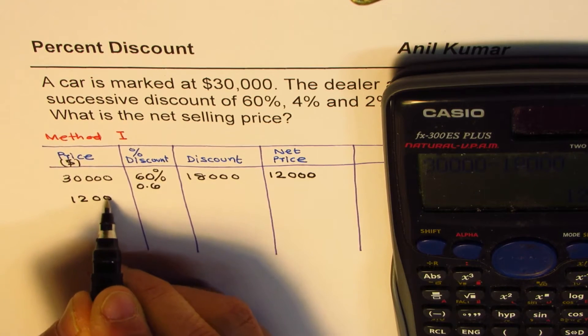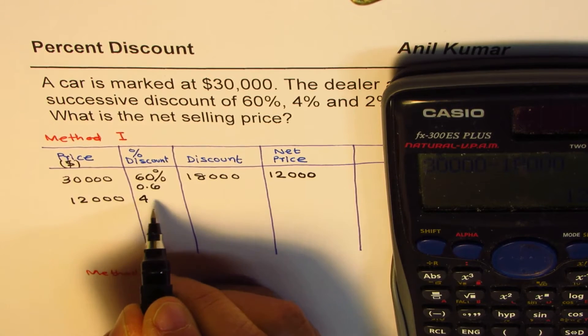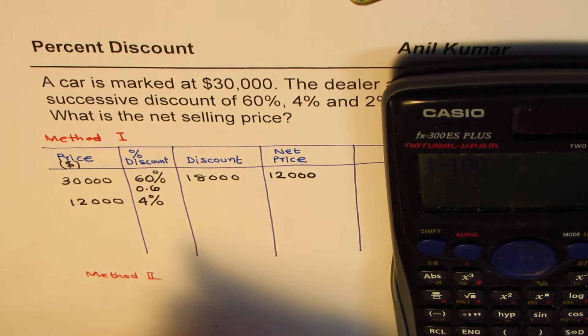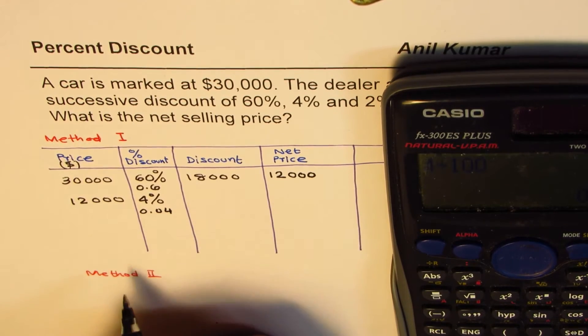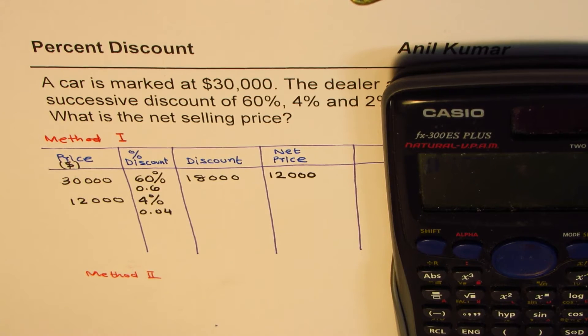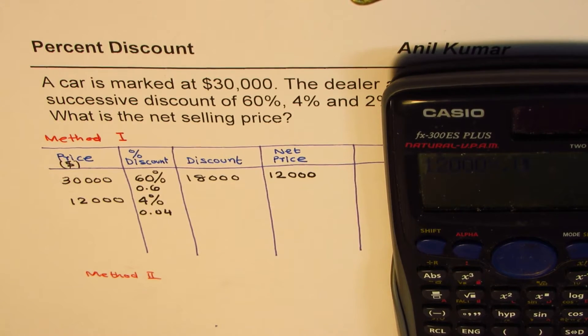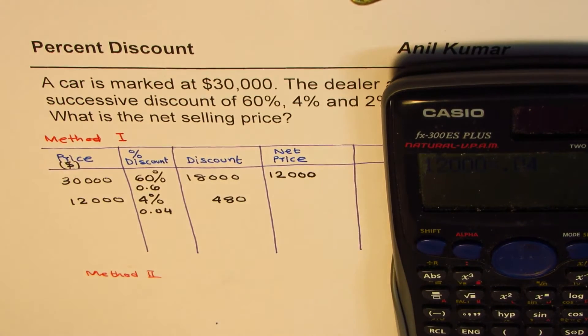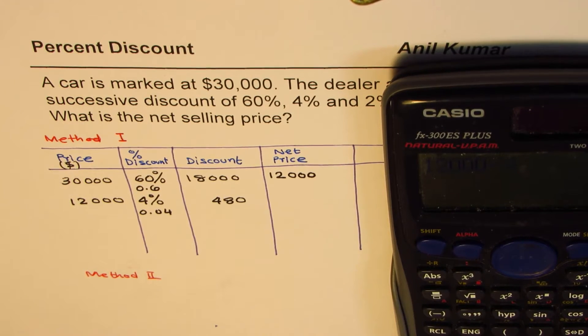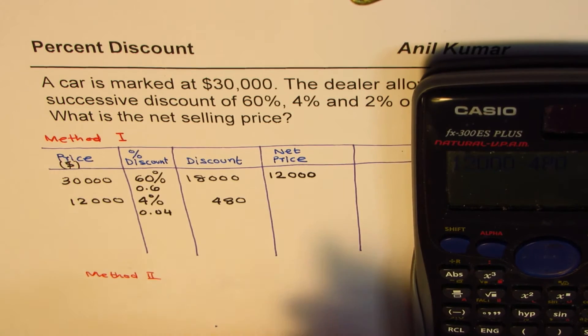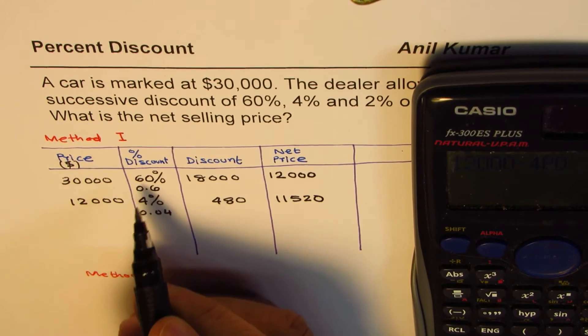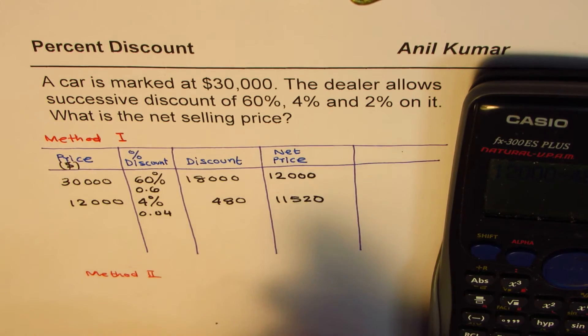Now on 12,000 we have 4% discount, so write 12,000 here. 4%, as you can see, can be written as 4 divided by 100. So 4 divided by 100 is in decimals 0.04. It is important, not 0.4 but 0.04. So we'll multiply 12,000 by 0.04 to get the discount of 480, and we'll take away 480 from 12,000.